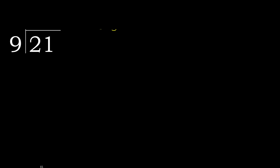21 divided by 9. 2 is less, therefore next. 21 — 21 is not less, therefore with 21: 9 multiplied by which number is nearest to 21 but not greater?